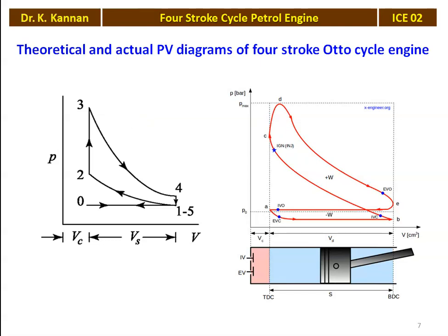This P-V diagram is drawn by an instrument called an indicator, which is attached to the engine cylinder. The cylinder pressure is measured by a pressure transducer or pressure sensor, and the crank rotation angle is also recorded. Using the crank rotation and pressure sensor, we can draw the P-V diagram.